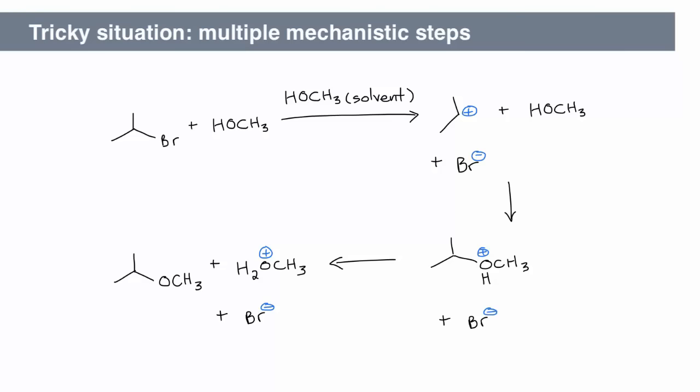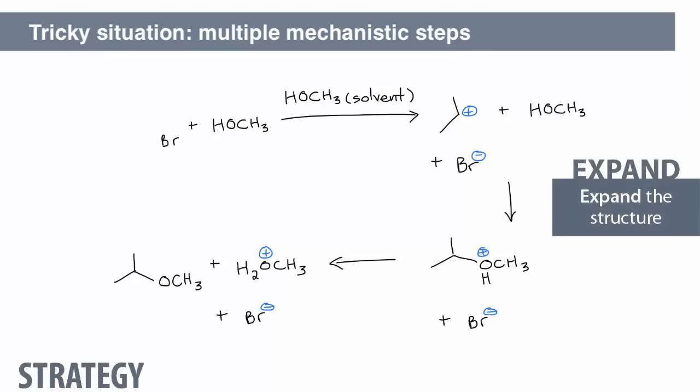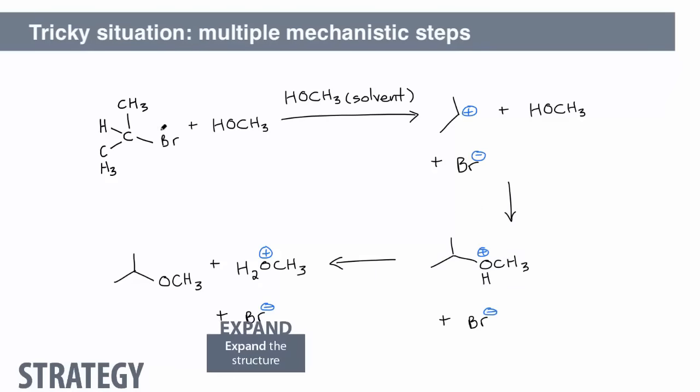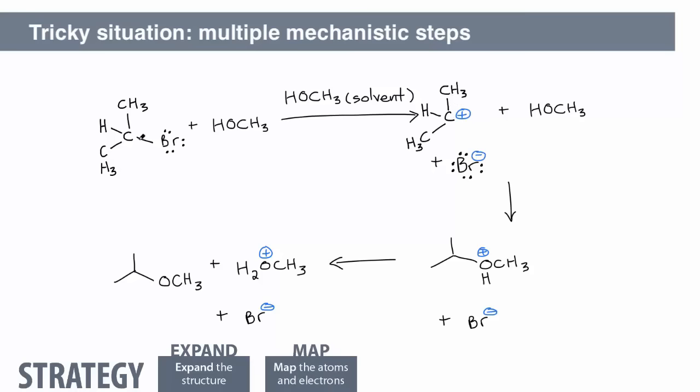What happens in the first step of this reaction? In the first step, the carbon-bromine bond breaks. That's all. Where should the first arrow start? The arrow must start from the bond between the carbon and bromine atoms. It must point to the bromine atom to show where the electrons go.